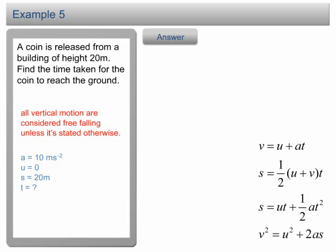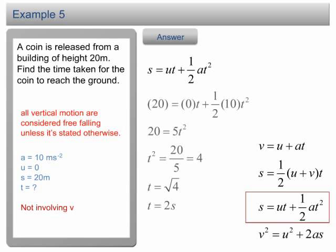In this question, final velocity is not involved. Therefore, we can use the equation s equals ut plus half at squared to solve the problem. Let's rewrite the equation. Substitute all the numbers into the equation and solve it. The time taken is 2 seconds.